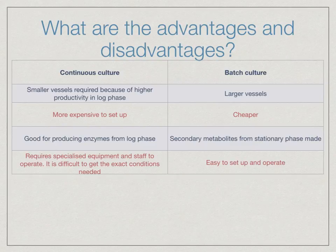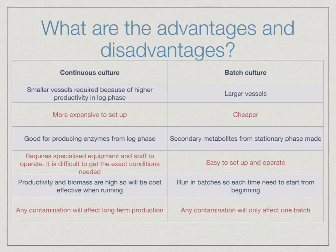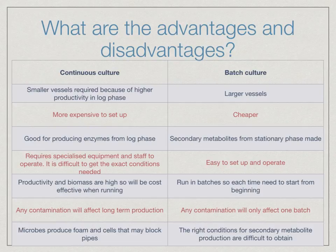Continuous culture requires specialized equipment and staff to operate, making it difficult to get the exact conditions needed; whereas batch culture is easy to set up and operate. In continuous culture, productivity and biomass are high, so it will be cost effective when running; whereas batch culture is run in batches, meaning you need to start from the beginning each time. In continuous culture, any contamination will affect long-term production; whereas in batch culture, contamination will only affect one batch. Finally, in continuous culture, microbes can produce foam and cells that block pipes; in batch culture, the right conditions for secondary metabolite production are difficult to obtain.